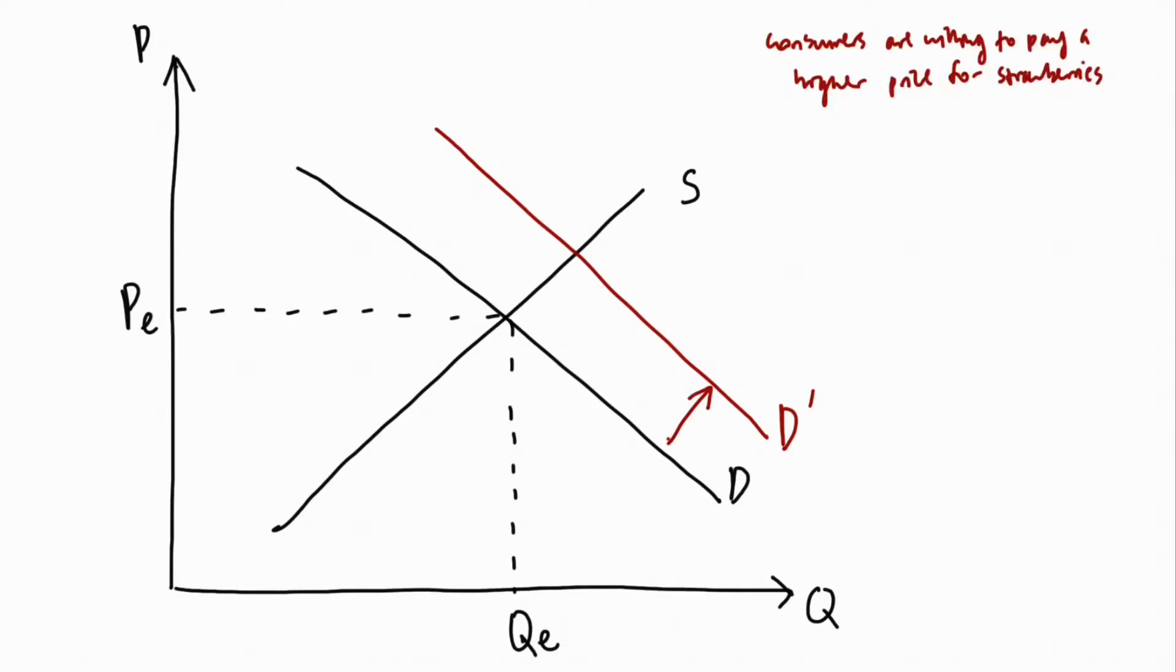Now consumers are willing to pay a higher price for strawberries because at the original equilibrium price more people are willing to buy strawberries for the added health benefit and quantity demanded increases.